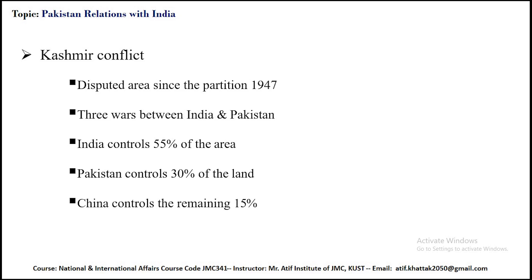China controls the remaining 15 percent of the land area, including the mostly uninhabited Karakoram tract. After the partition of India, Pakistani tribal mujahideen invaded Kashmir, leading the Hindu ruler of Jammu and Kashmir to join India and starting the Indo-Pakistan War of 1947. This war ended with a United Nations mediated ceasefire along a line that eventually became known as the Line of Control, the LOC.